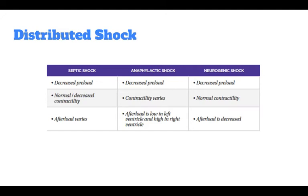Distributive shock is further categorized into warm and cold shock. If the person is experiencing warm shock, they commonly will have warm peripheral skin and a wide pulse pressure in the setting of hypotension. If the person is experiencing cold shock, they commonly will have pale, vasoconstricted skin and narrow pulse pressure hypotension. In each case, distributive shock is generally considered when the person is likely to have one of the three main causes: sepsis, anaphylaxis, or a neurological problem.